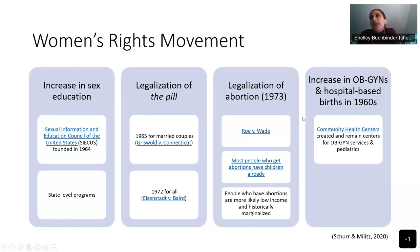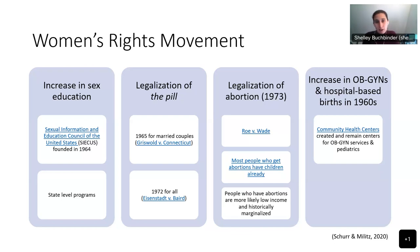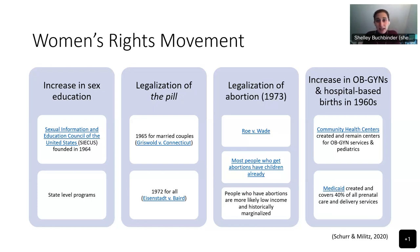In terms of an increase in obstetrics, gynecology, and hospital-based births, community health centers — sometimes called federally qualified health clinics, like Generations in Putnam and Willimantic — were created in the 1960s and remain centers for obstetrics, gynecology, and pediatrics. They accept Medicaid and offer sliding-scale services. Medicaid was created in 1965 alongside Medicare and covers about 40% of all prenatal care and delivery services. For Medicaid, pregnancy is considered a disability, so it covers people who wouldn't normally qualify — incredibly important for ensuring safe prenatal care and labor and delivery.